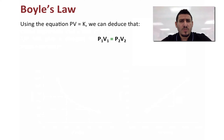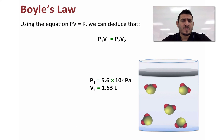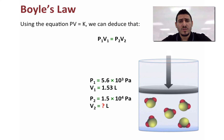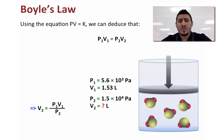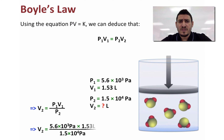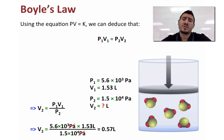Let's go back to the previous example. We had a gas sample with pressure 5.6 × 10³ Pascal and volume 1.53 liters. After increasing the pressure to 1.5 × 10⁴ Pascal, using P1V1 = P2V2, V2 equals P1 times V1 over P2, which gives a volume of 0.57 liters.